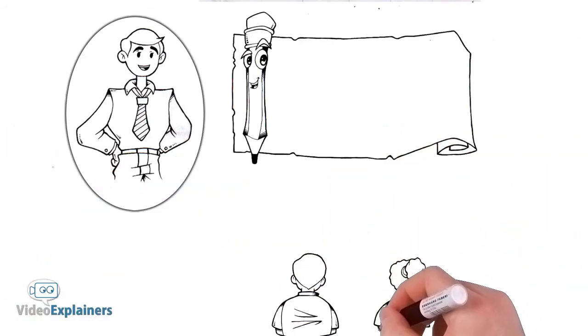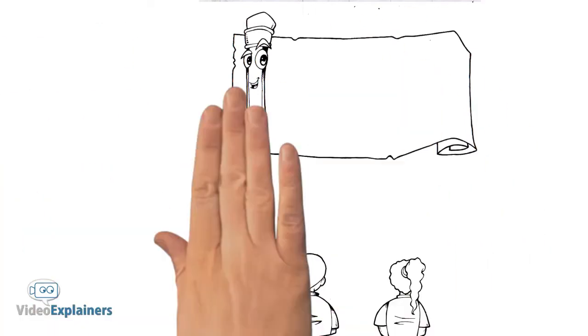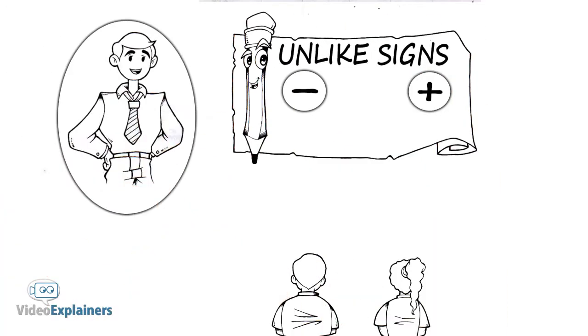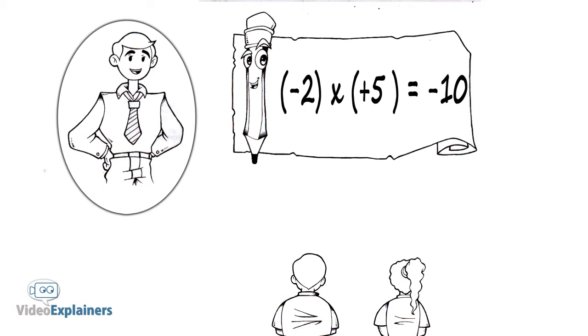Example: negative two times positive five. The signs are negative and positive, so they are unlike signs. They are different to each other, so the result must be negative. Negative two times positive five equals negative ten.